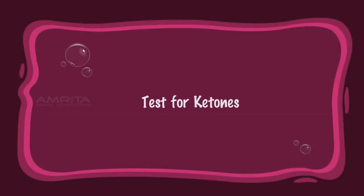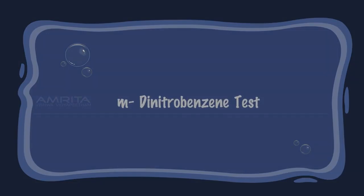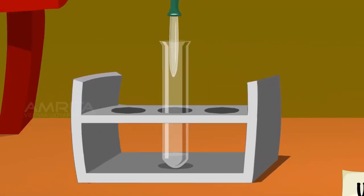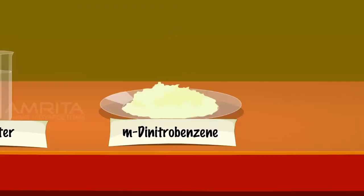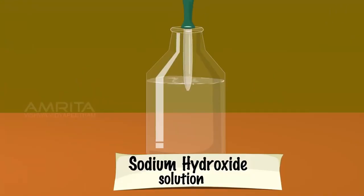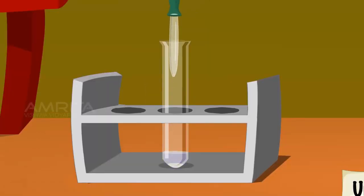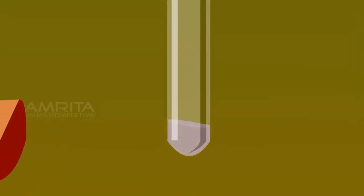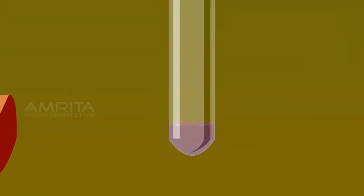Test for ketones — M-dinitrobenzene test. Procedure: Take a dropper and take some drops of the given liquid, pour it into a test tube. Add a small amount of powdered m-dinitrobenzene to it. Add a small quantity of dilute sodium hydroxide solution and shake well. Appearance of a violet colour that slowly fades confirms the presence of a ketonic group.